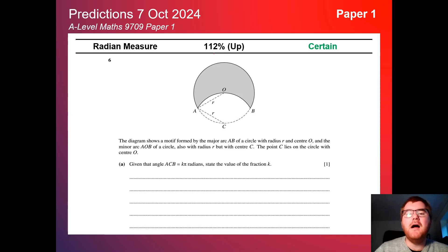On to radian measure, slightly up here at 112%. This is a regular question usually towards the middle of the paper, so question 6 is pretty typical. Working with finding the arc, also working out the area of the sector, and working with those two formulae as well.